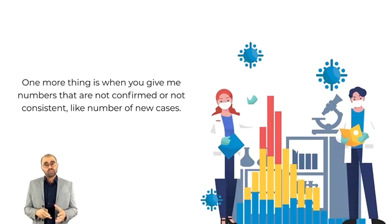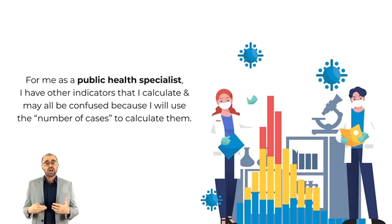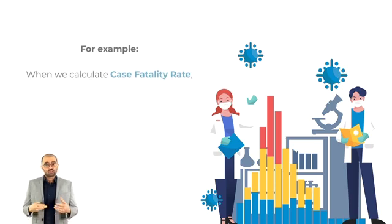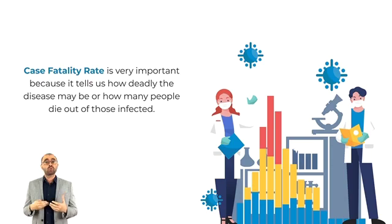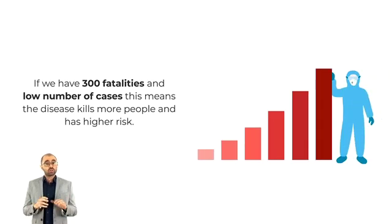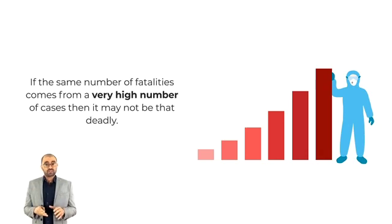One more thing: when you give me numbers that are not confirmed and not consistent, like the number of new cases, as a public health specialist I have other indicators I will calculate, and they may all be confused because I will use those unreliable case numbers to calculate them. For example, when we calculate the case fatality rate, we simply divide the number of fatalities due to the disease by the number of cases over a period of time. The case fatality rate is very important because it tells us how deadly the disease may be. So if we have 300 fatalities from a lower number of cases, the disease appears to kill more people and has a high risk. If the same 300 fatalities come from a very high number of cases, then it may not be that bad.